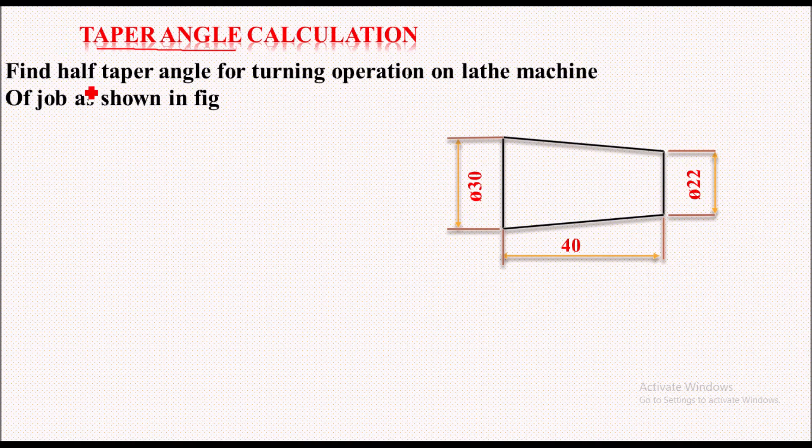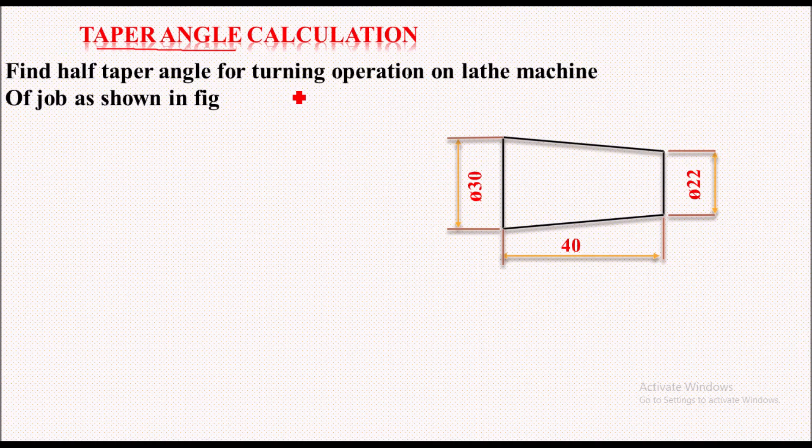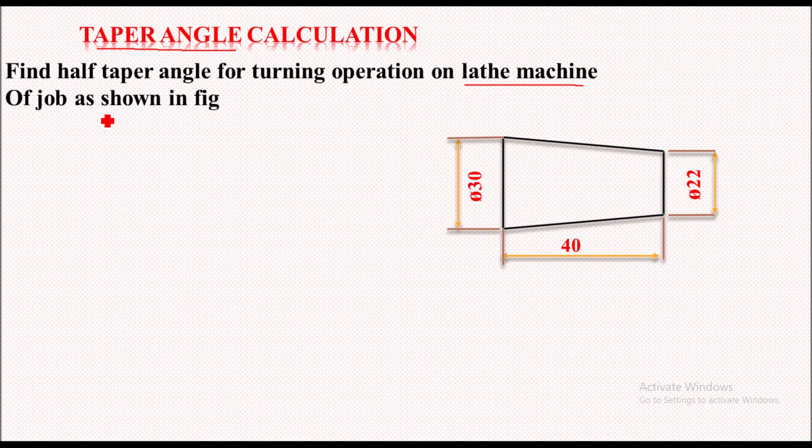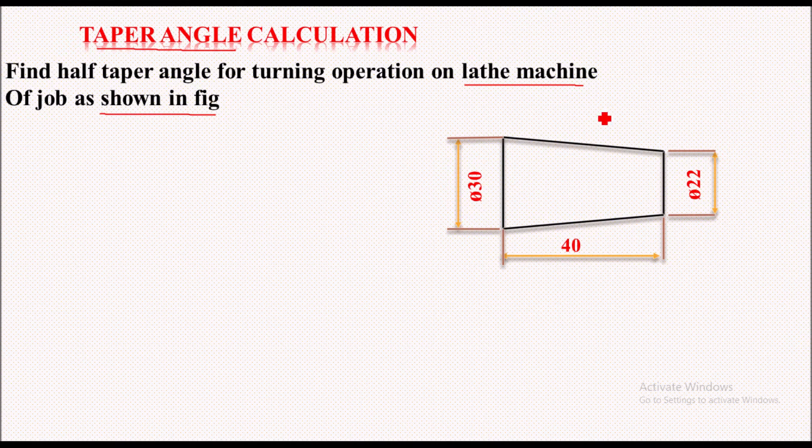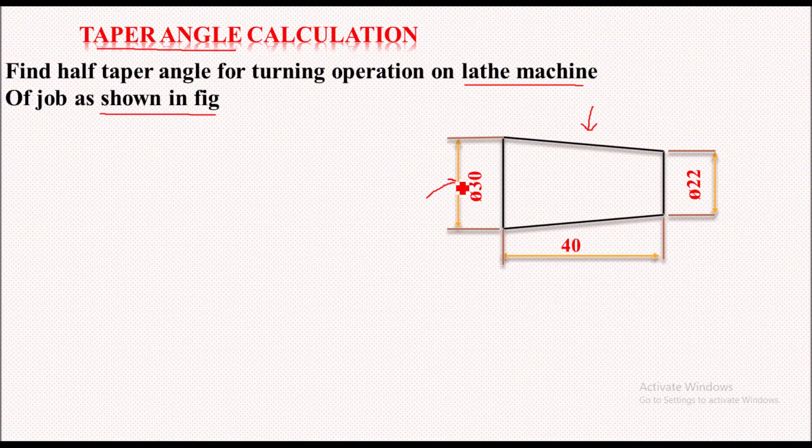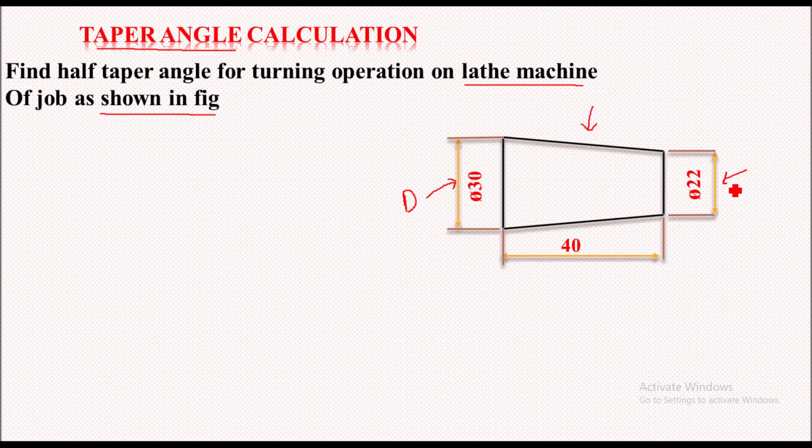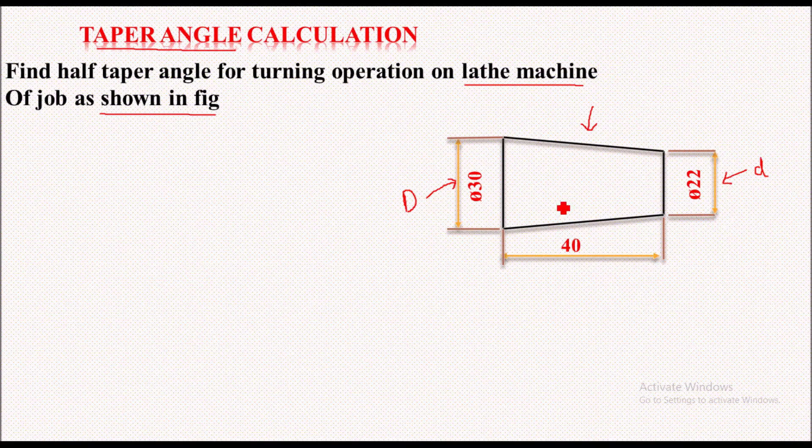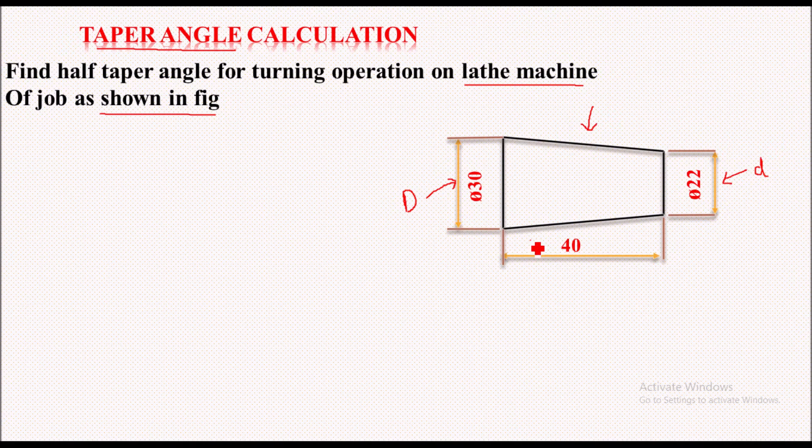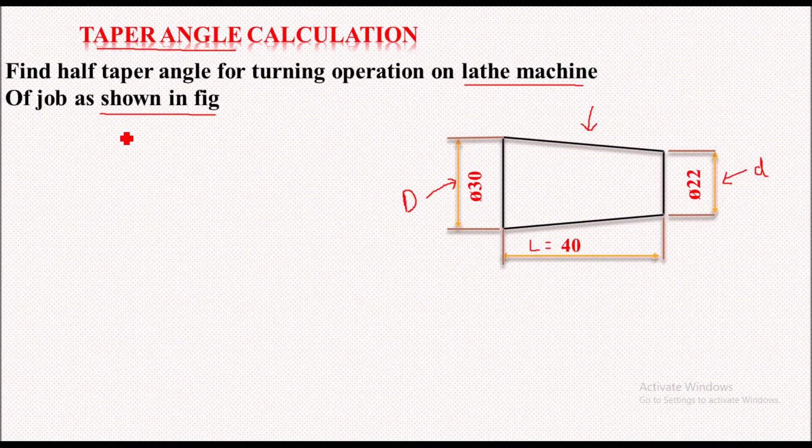Find the half taper angle for turning operation to be performed on lathe machine of a job which is as shown in figure. So we have this taper job. Maximum diameter of this taper job is 30 mm, let's call it capital D. Small diameter of this job is 22 mm, let's call it small d, while the length of taper is to be 40 mm.